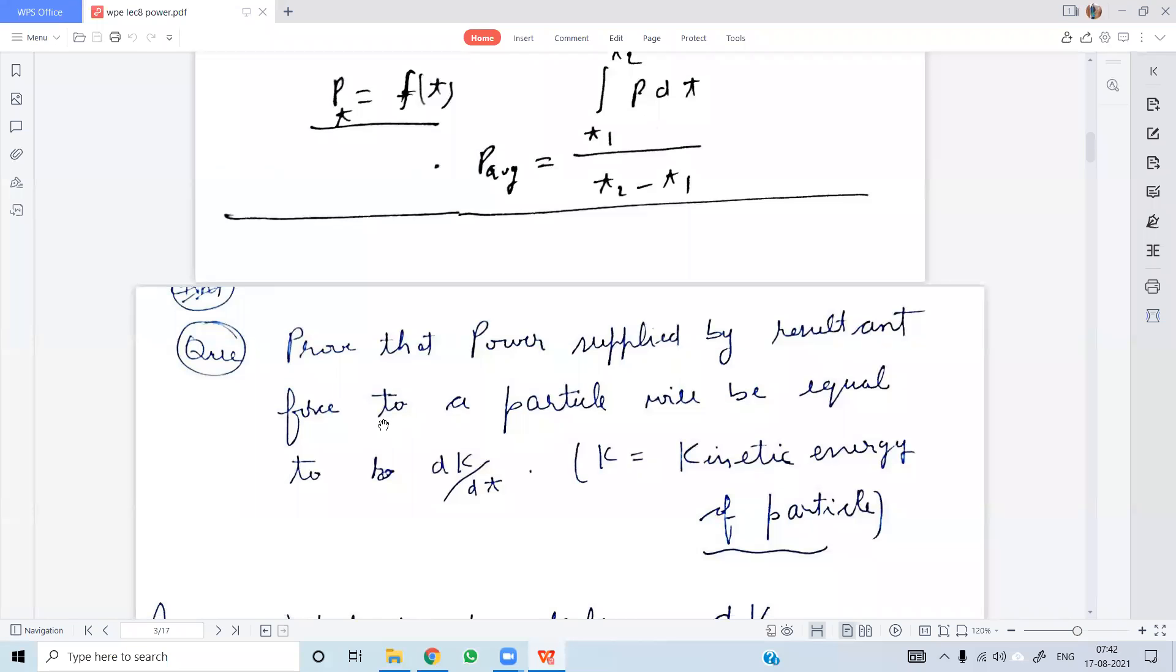The power supplied by the resultant force to a particle will be equal to dK_y/dt, where K is the kinetic energy of the particle. Which of the following options is correct? The statement is correct: resultant force power supplied to a particle will be equal to rate of change of kinetic energy of the particle. Then press the right statement.